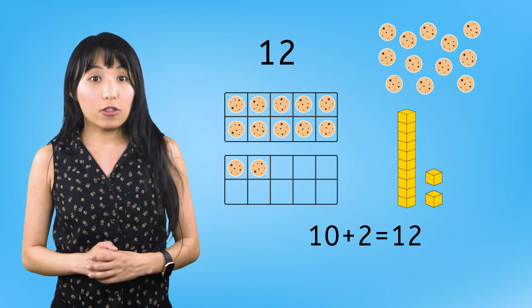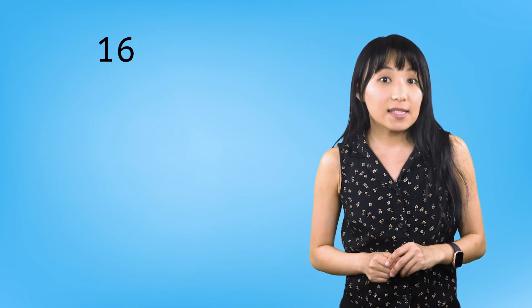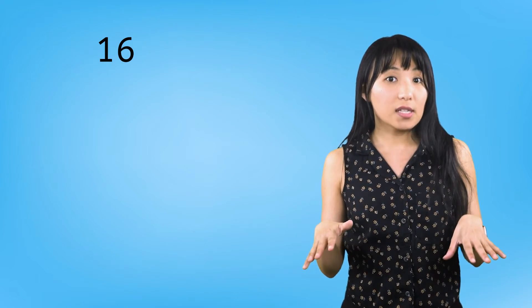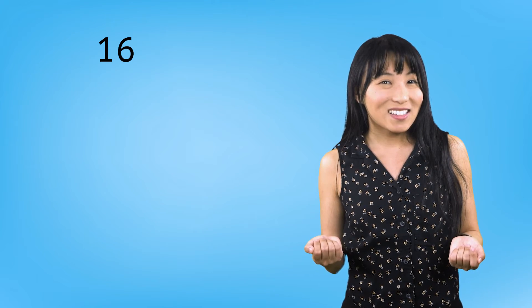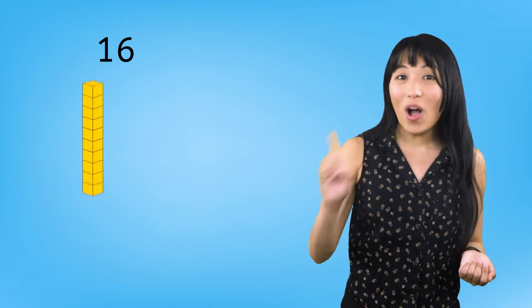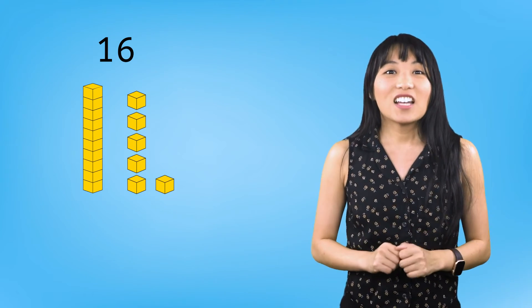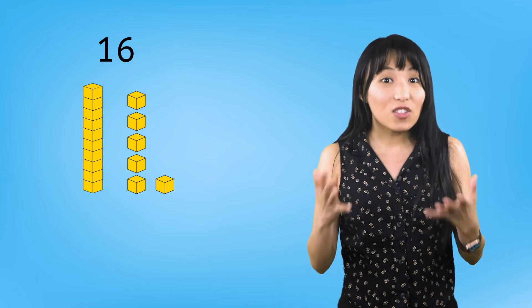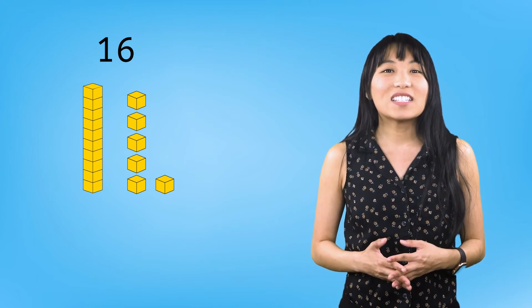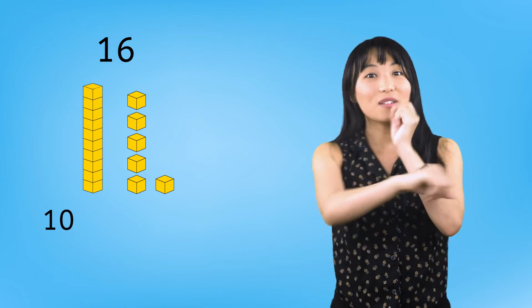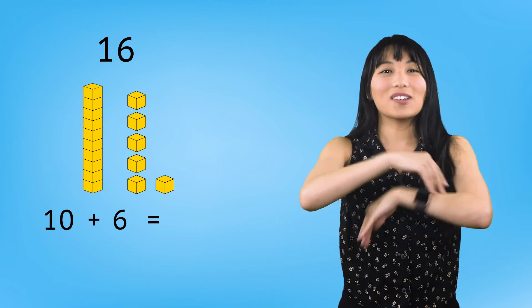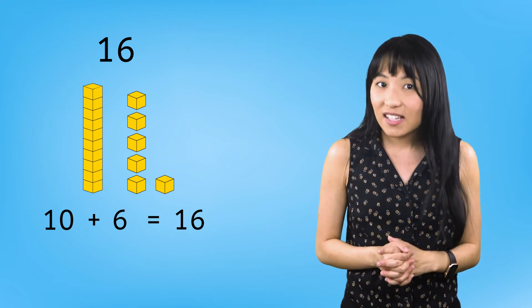Let's take a look at another number. Here is the numeral we use to show the number 16. It is made up of a 1 and a 6. If we wanted to represent 16 with base 10 blocks, how many 10 and 1 blocks do you think we would use? We would use one 10 and 6 ones, just like the numbers we used in the numeral 16. That means our addition sentence would be 10 plus 6 equals 16. There's that 1 and 6 again.